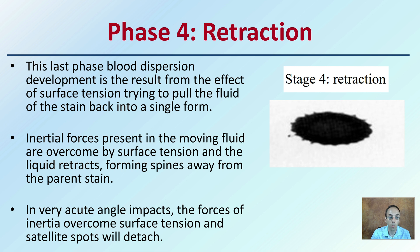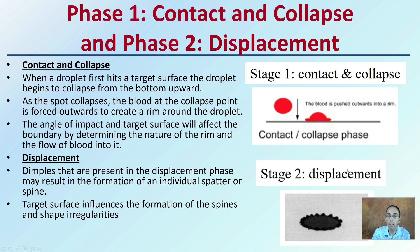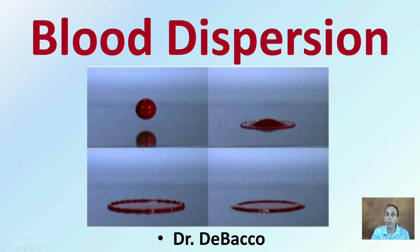A very acute angle impact causes the forces of inertia to overcome the surface tension, and satellite spots will detach. This gives you a brief look at the end phase and how it formed — starting with that contact phase through displacement. All of this helps you understand a little more of what's going on with blood dispersion because of the properties internal to the blood.